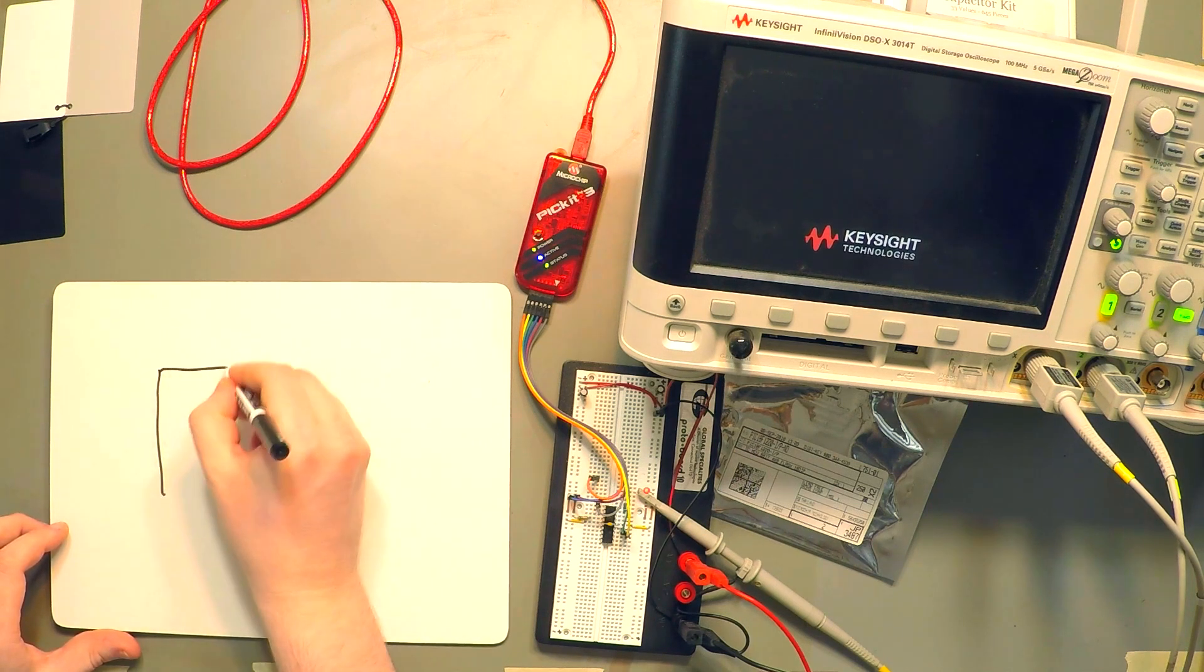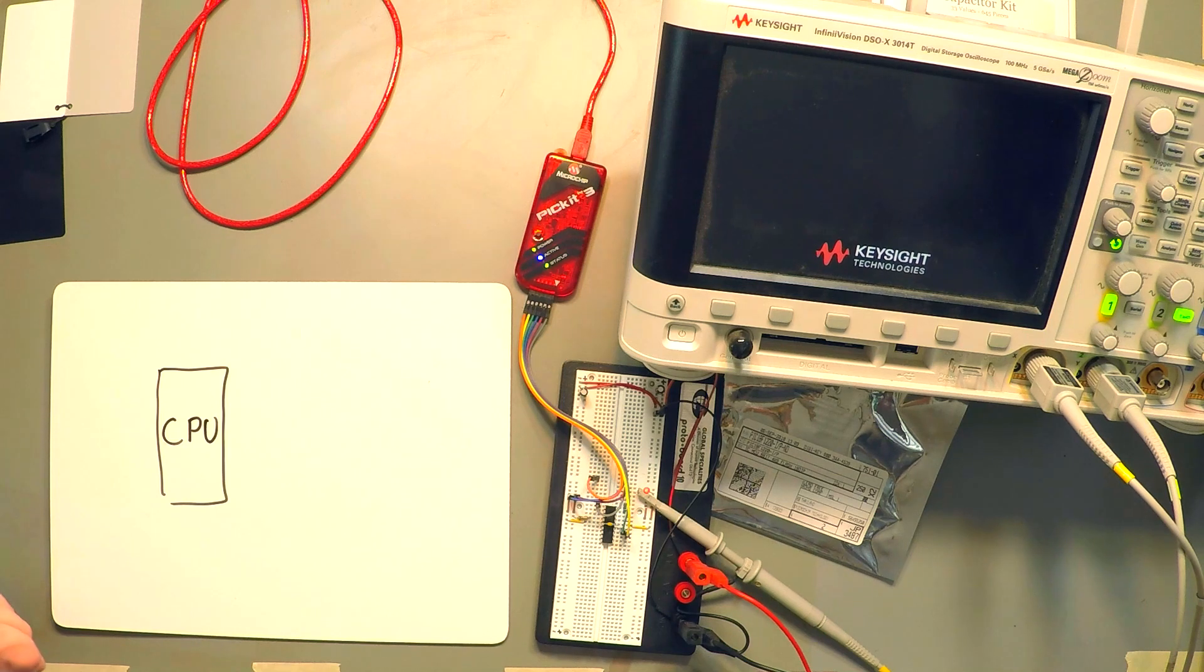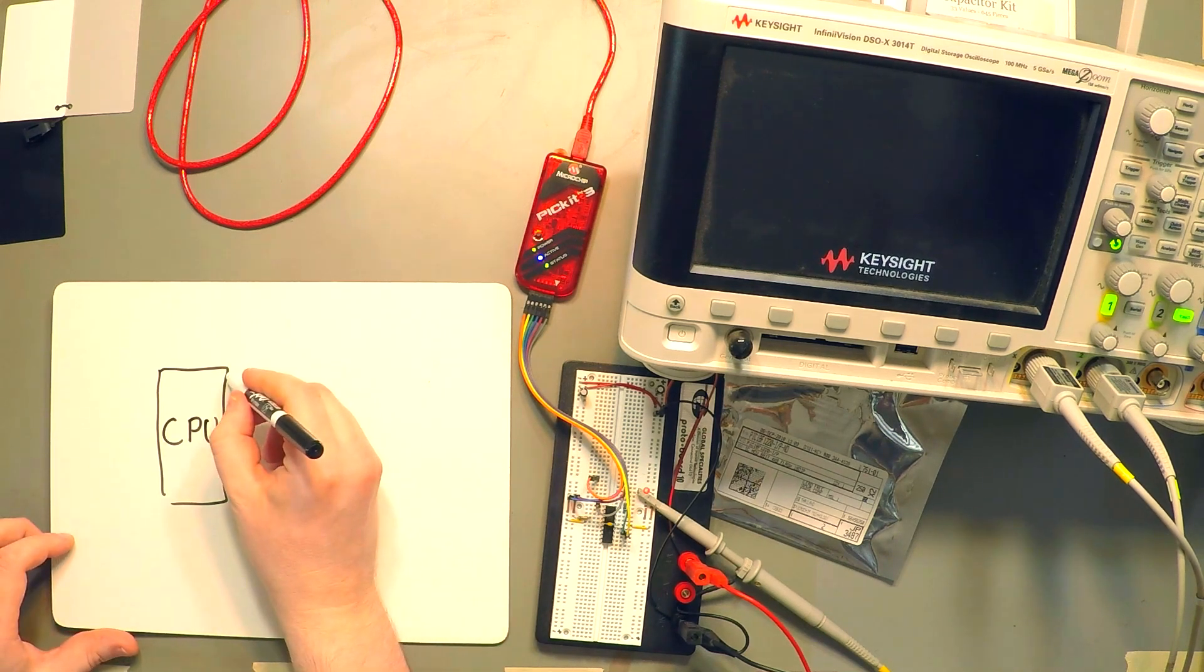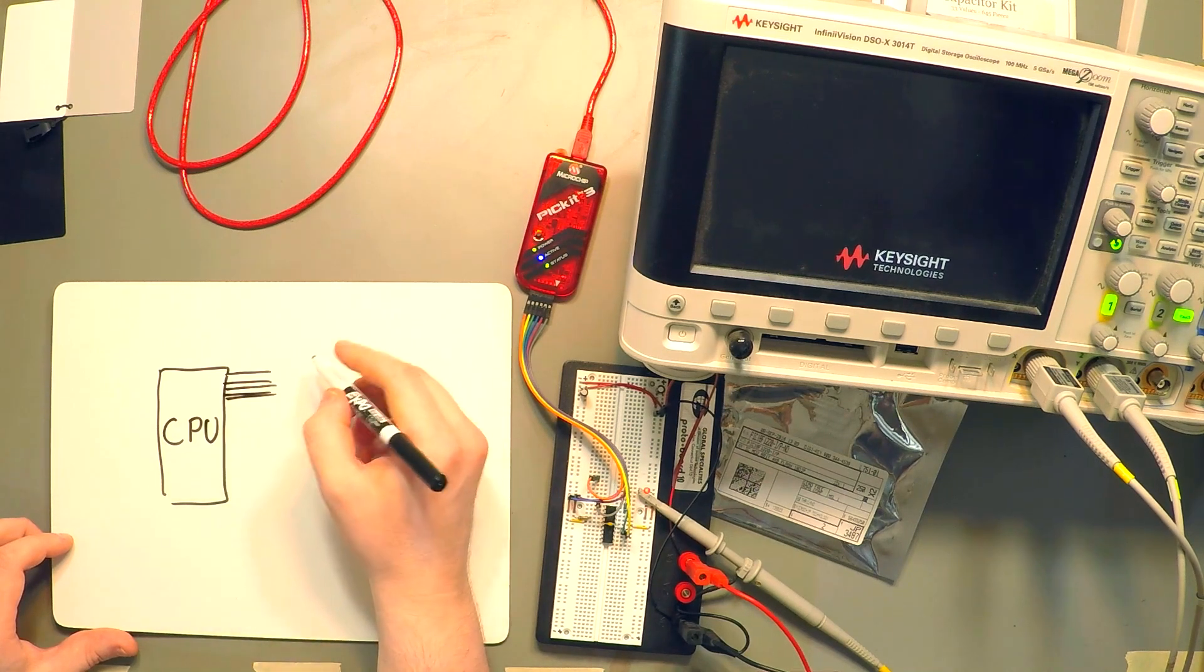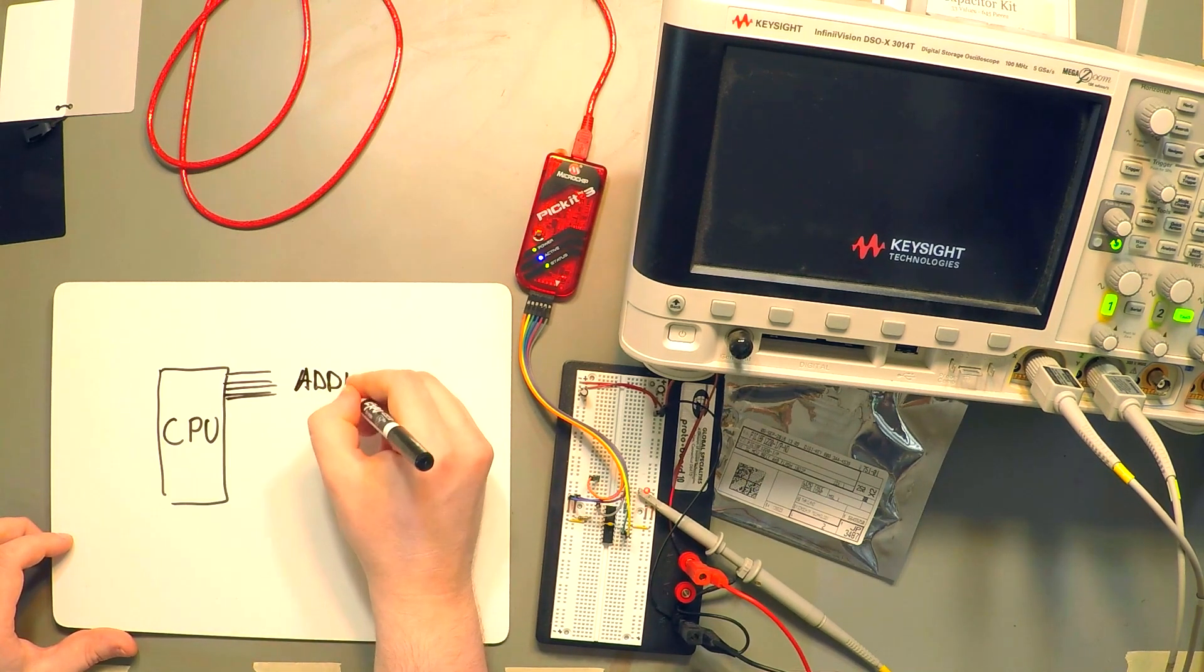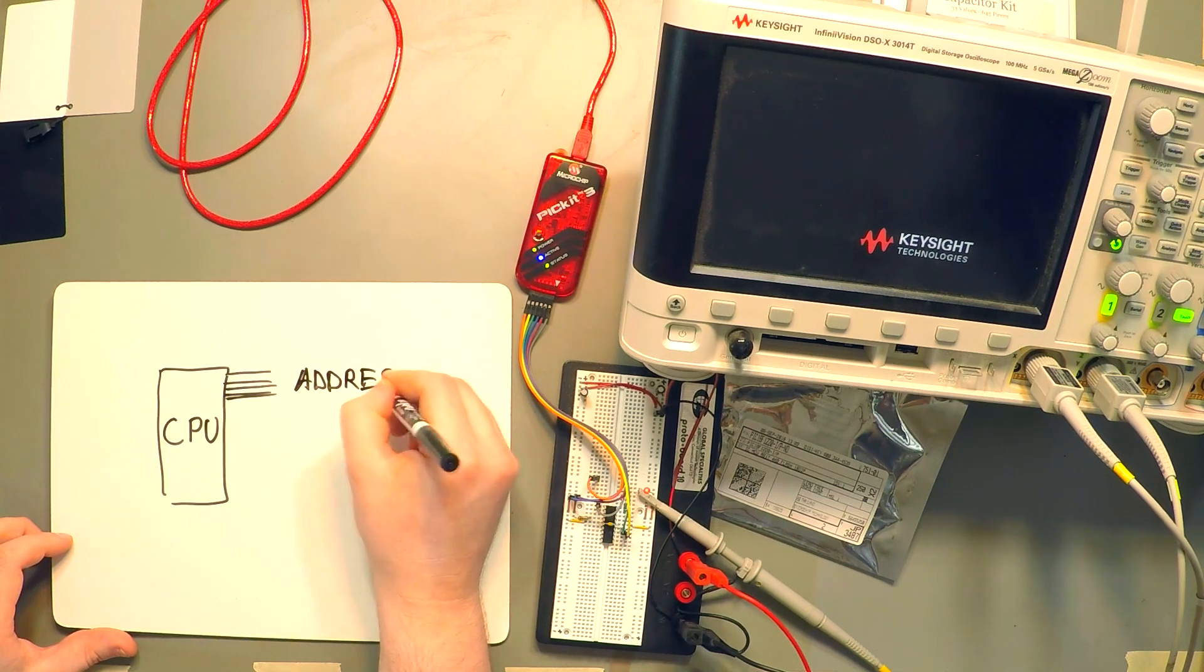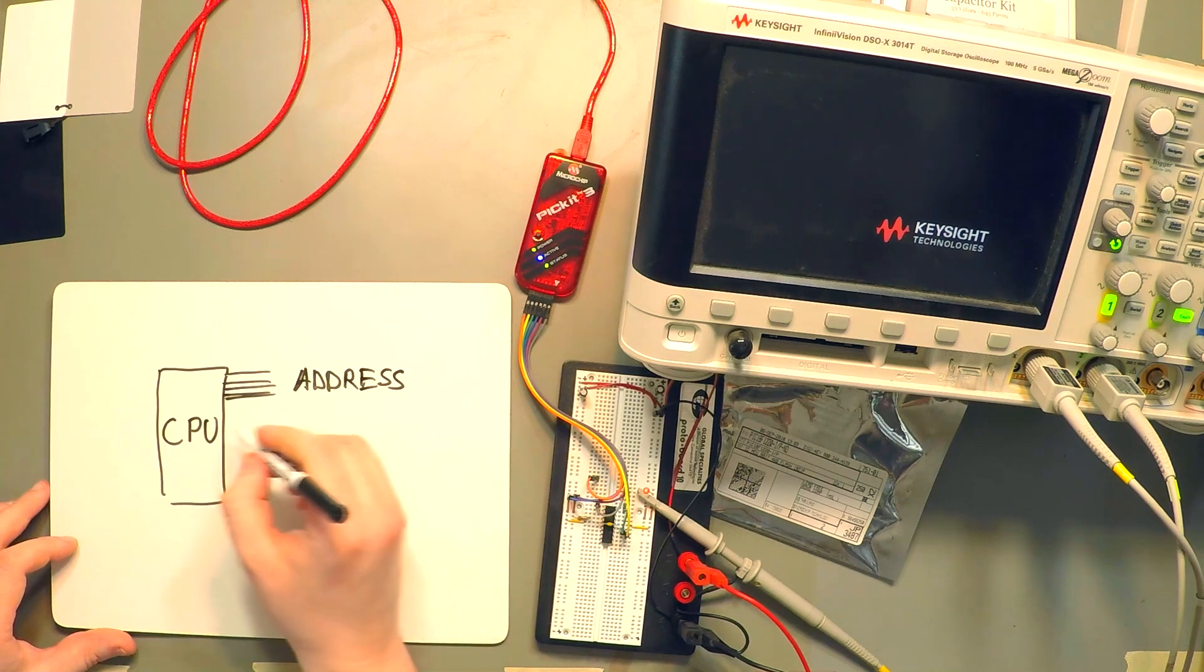Any microcontroller is going to have some sort of a CPU or a central processing unit on it. And coming out of this CPU there will be some signal lines which will carry the address information. And I'll explain what this means in a little bit.